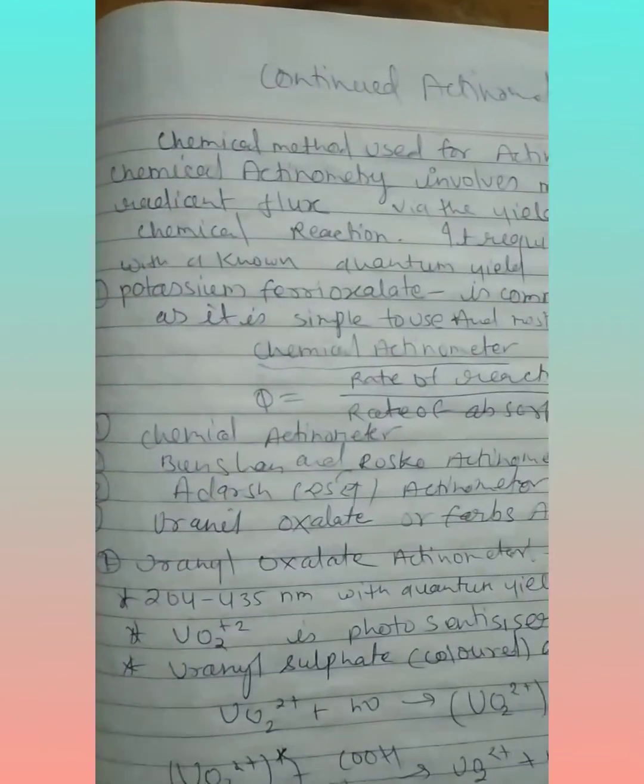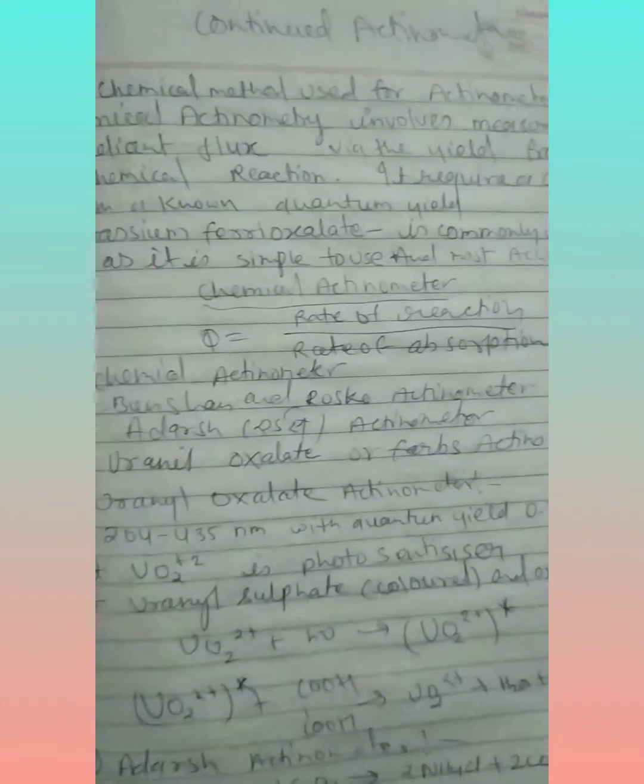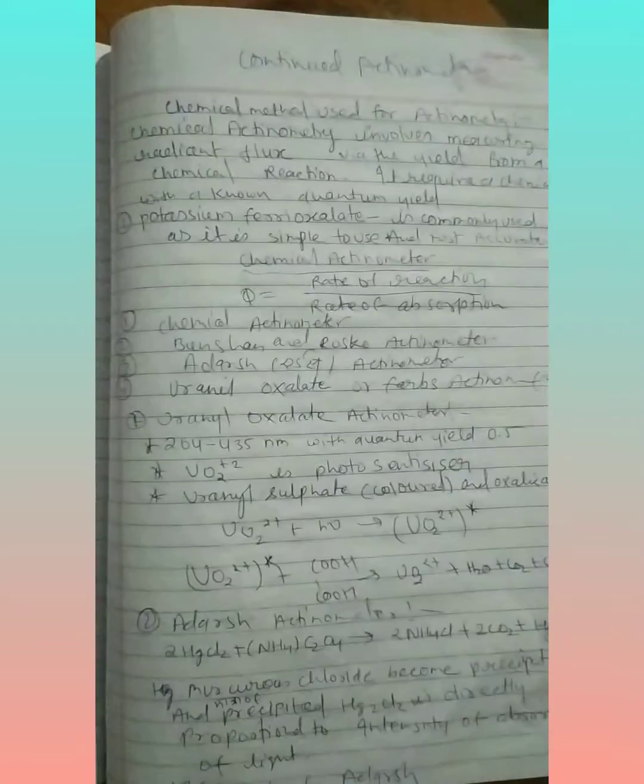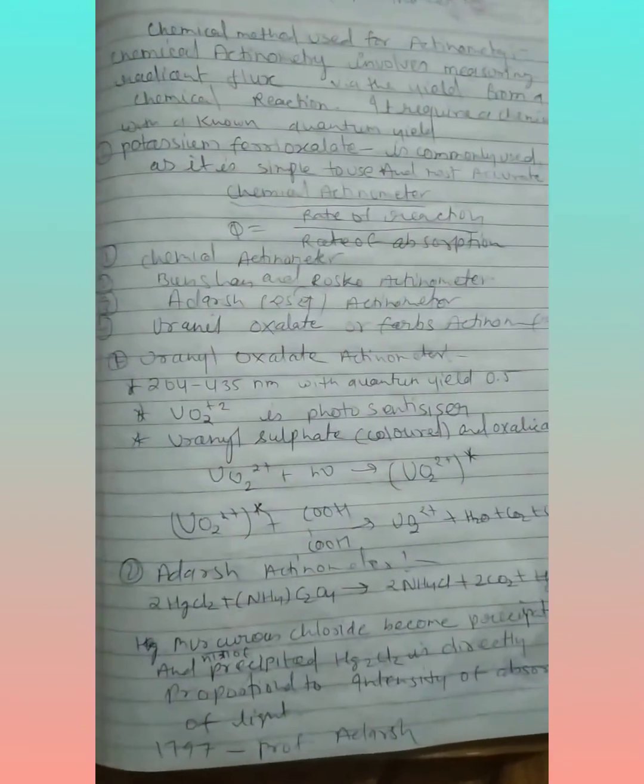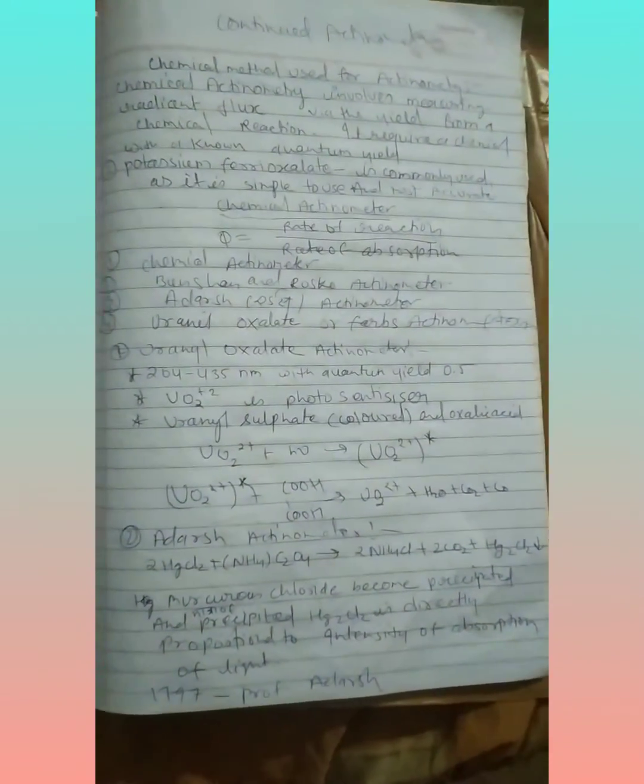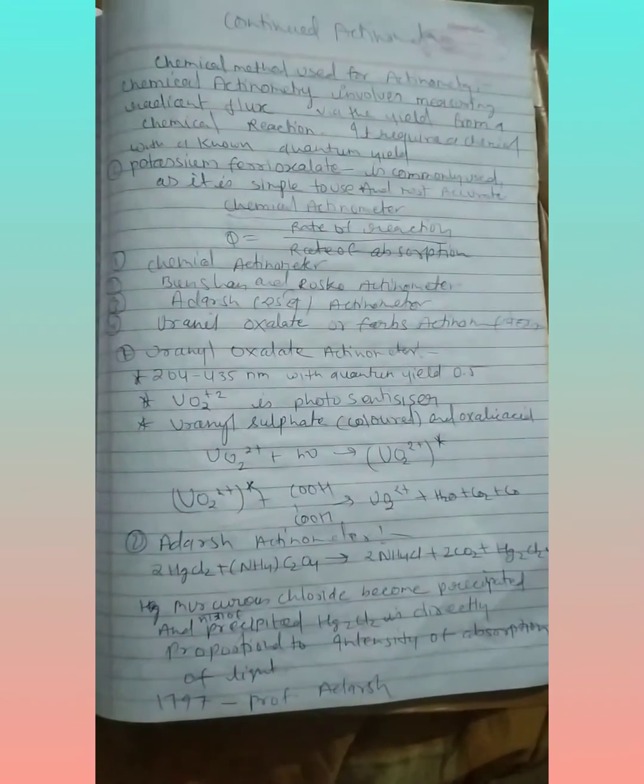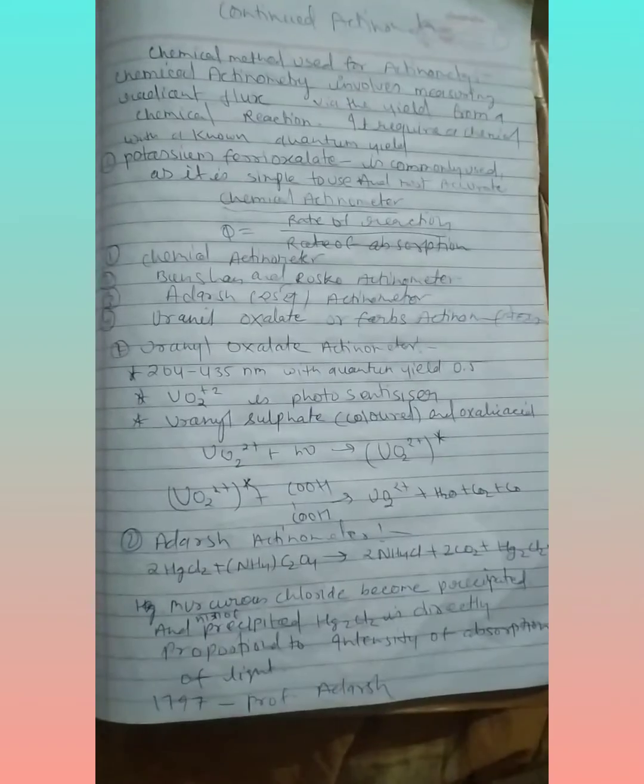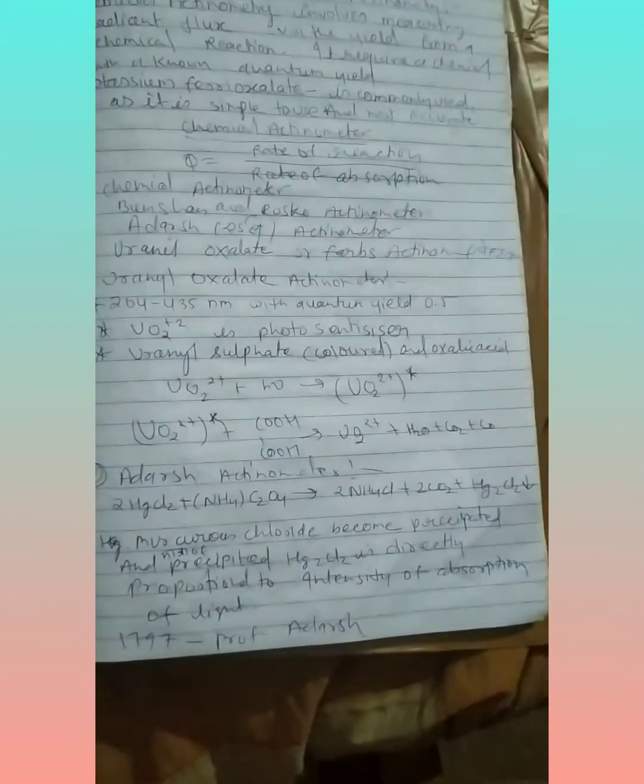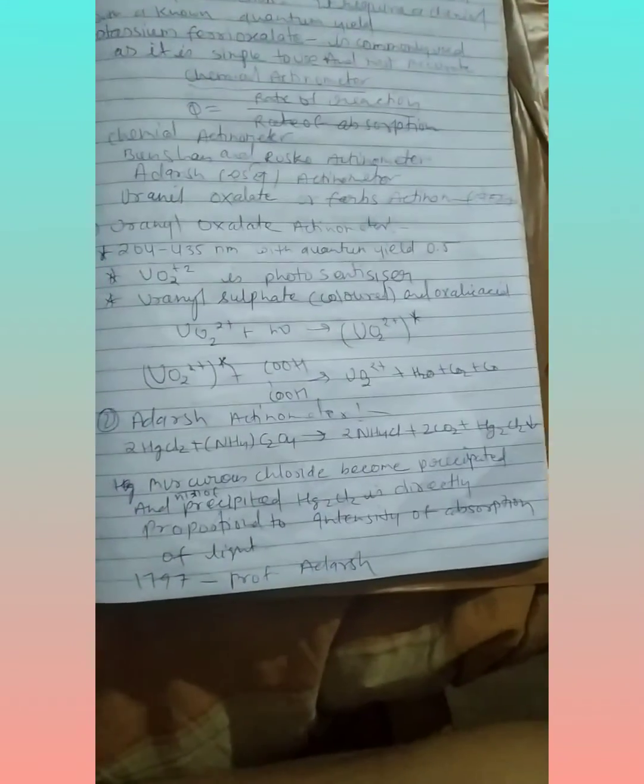The chemical methods for actinometry are: potassium ferro-oxalate, chemical actinometry munchen and rosco-actinometer, and others actinometer like uranyl oxalate or force actuator. Uranyl oxalate actuator is very important for exam and others actinometry is also very important.